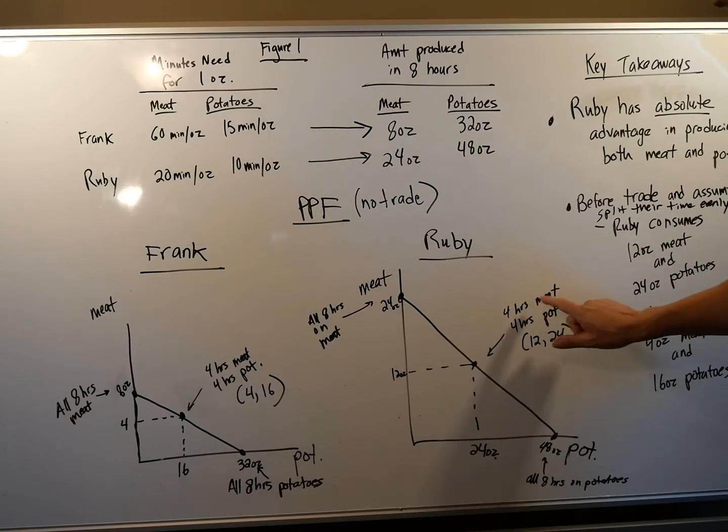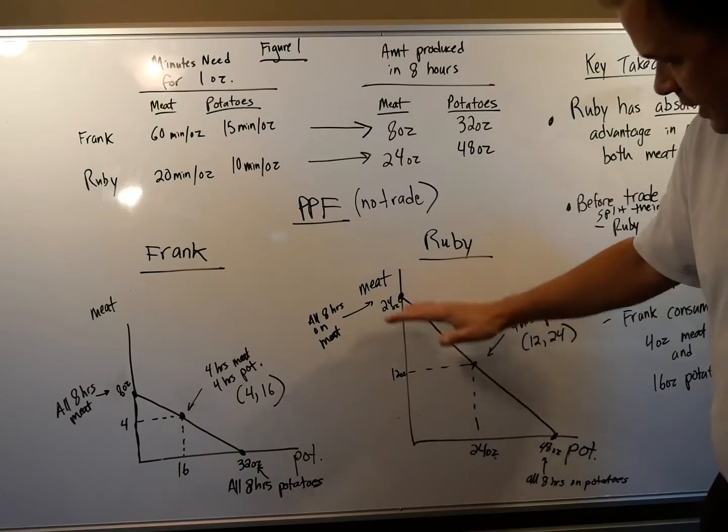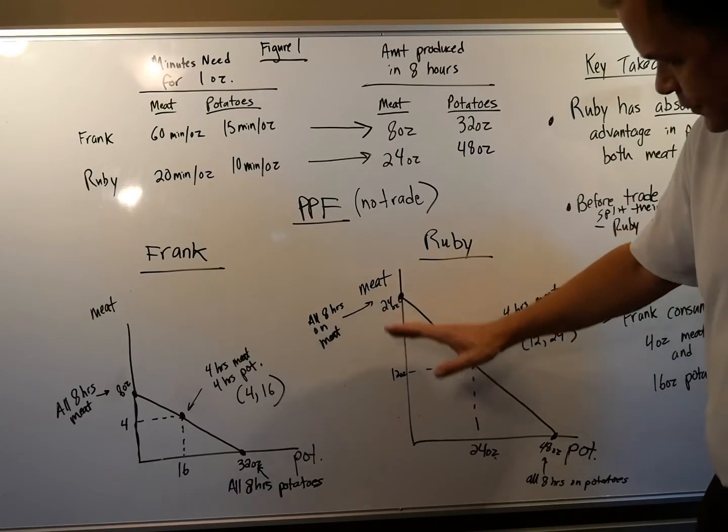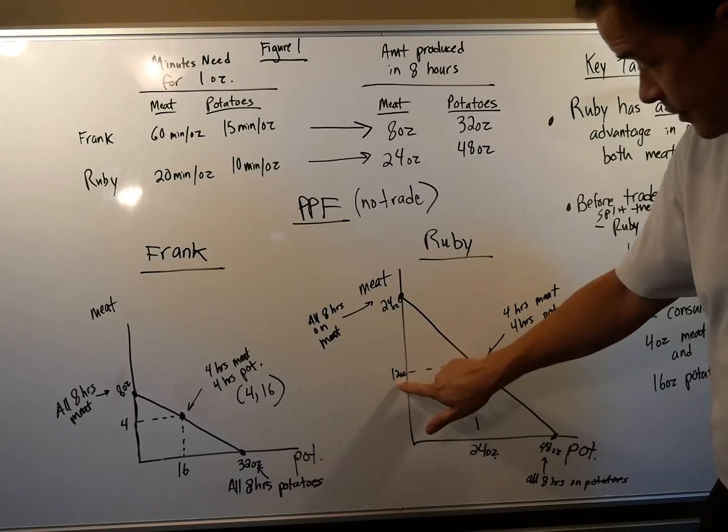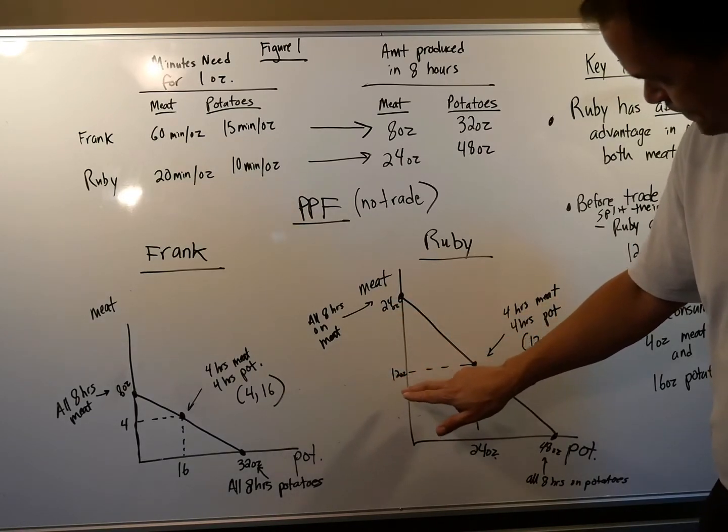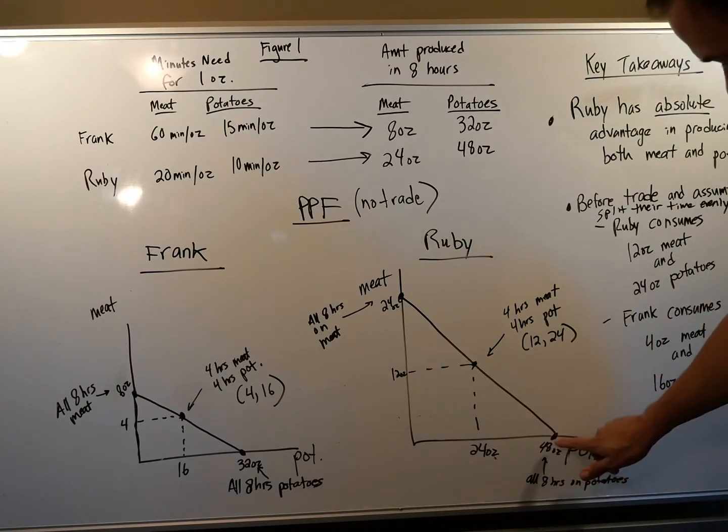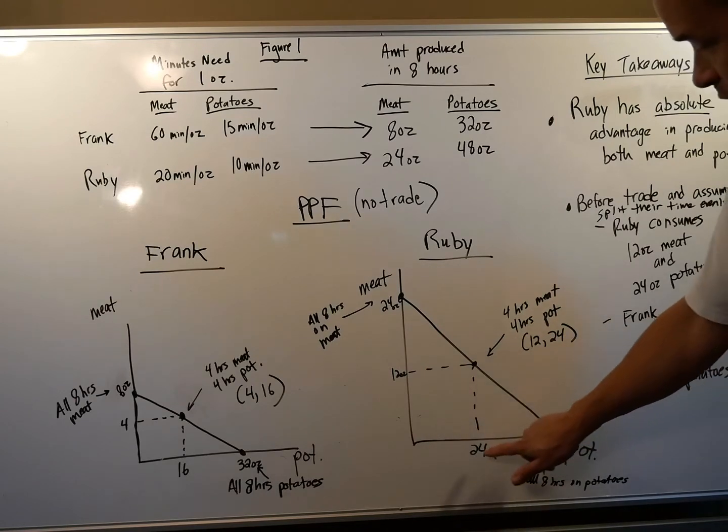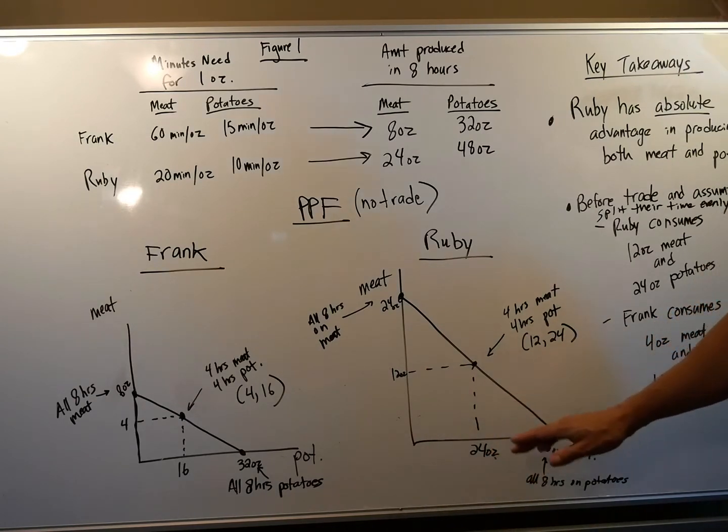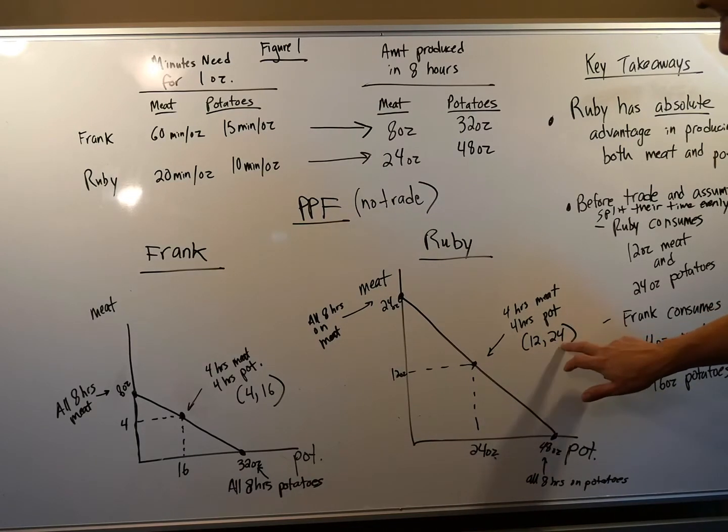Let's say she spends four hours on meat, four hours on potatoes, and you cut this in half because you're no longer spending eight hours. You cut it in half, you're spending four hours. You get 12 ounces of meat. 24 divided by two because eight divided by two is four. 12 ounces of meat and cut the 48 in half because you're going to spend four hours, not eight hours, 24 ounces of potatoes. So if she divides her time evenly, she gets 12 ounces of meat, 24 ounces of potatoes.